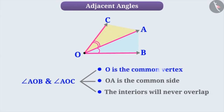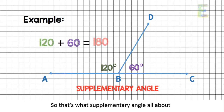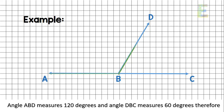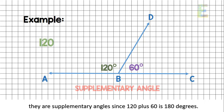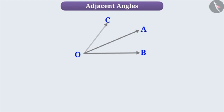Angles that have a common arm and a common vertex are called adjacent angles. If the sum of 2 angles is 180 degrees, they are supplementary angles. Angles that have a common arm and a common vertex are adjacent angles.